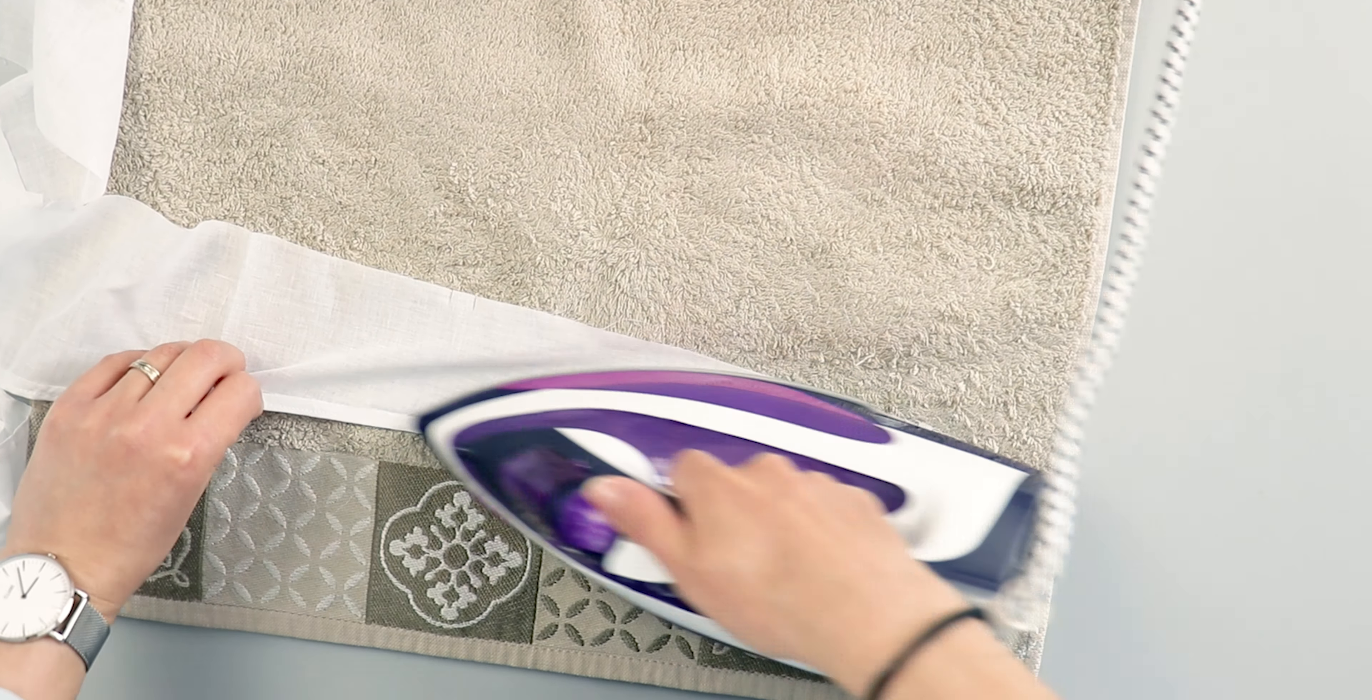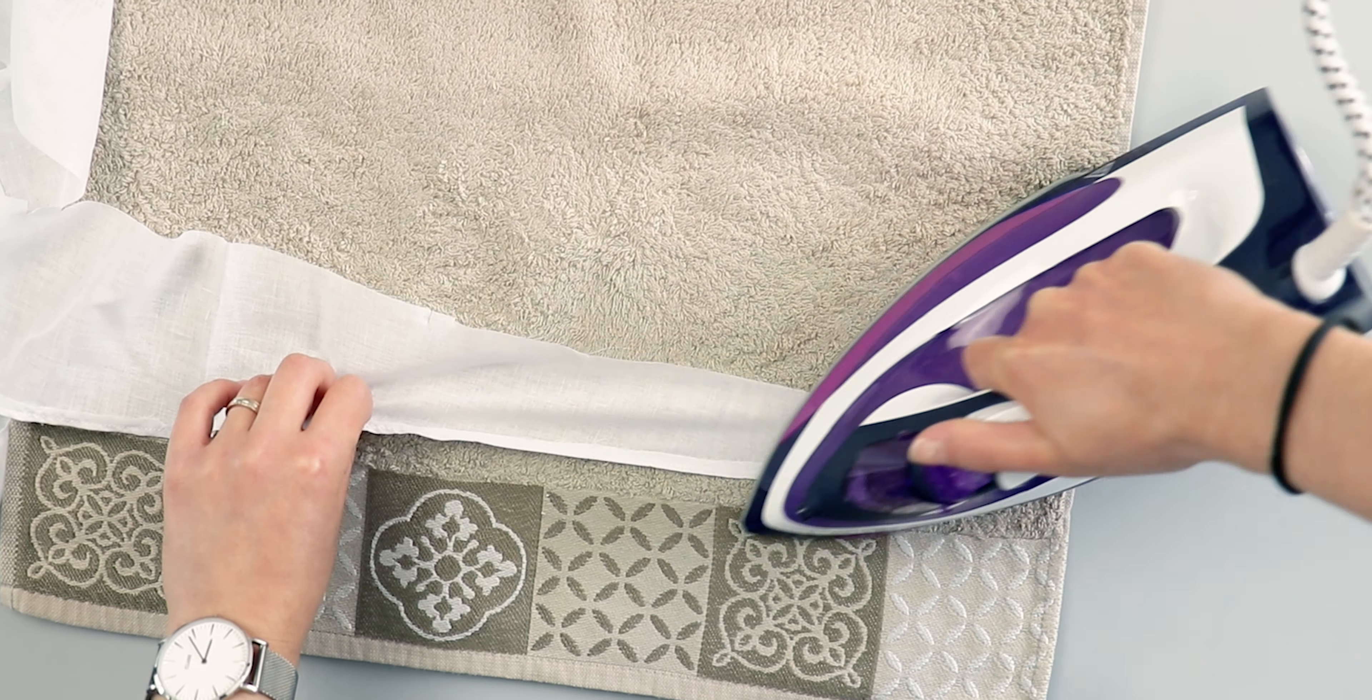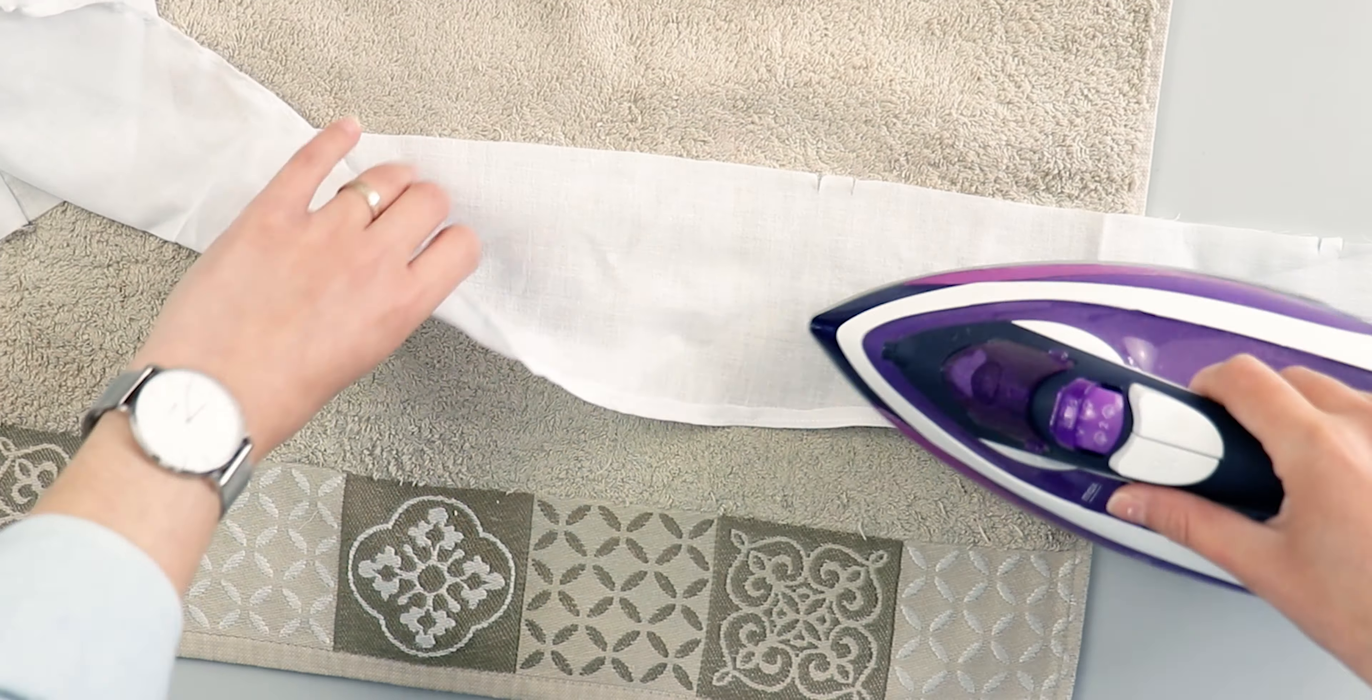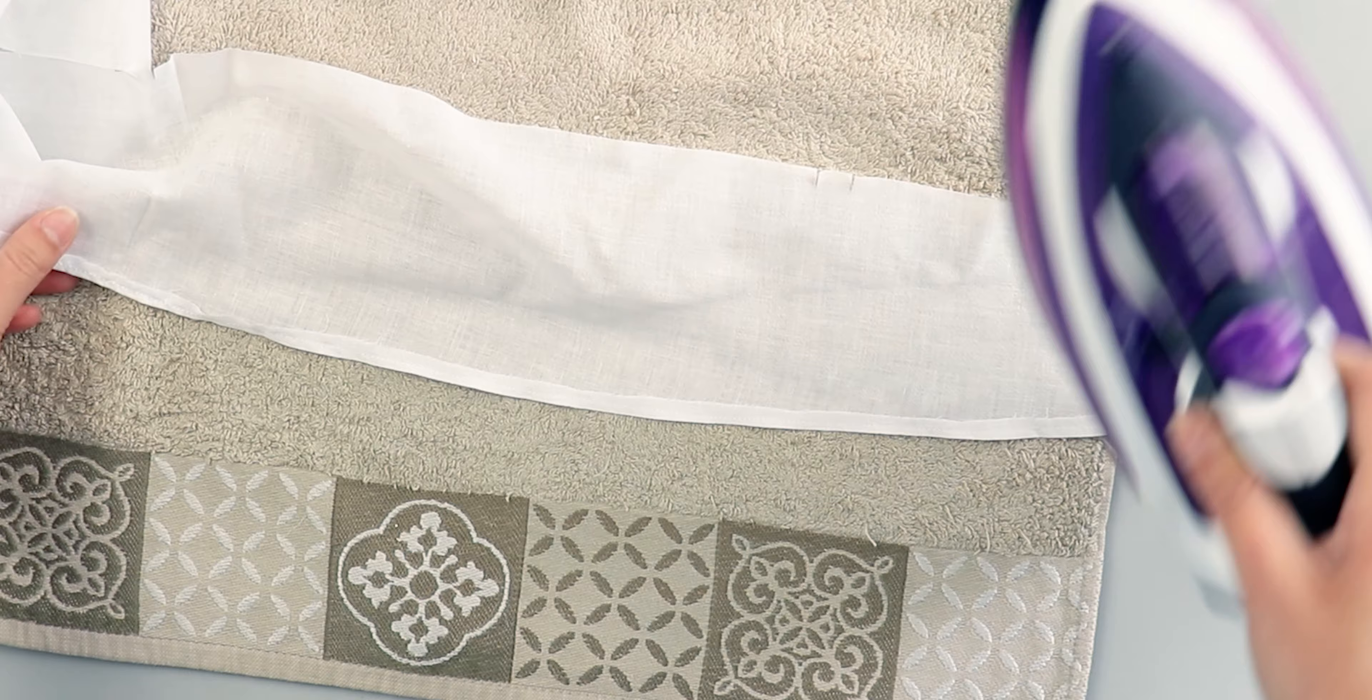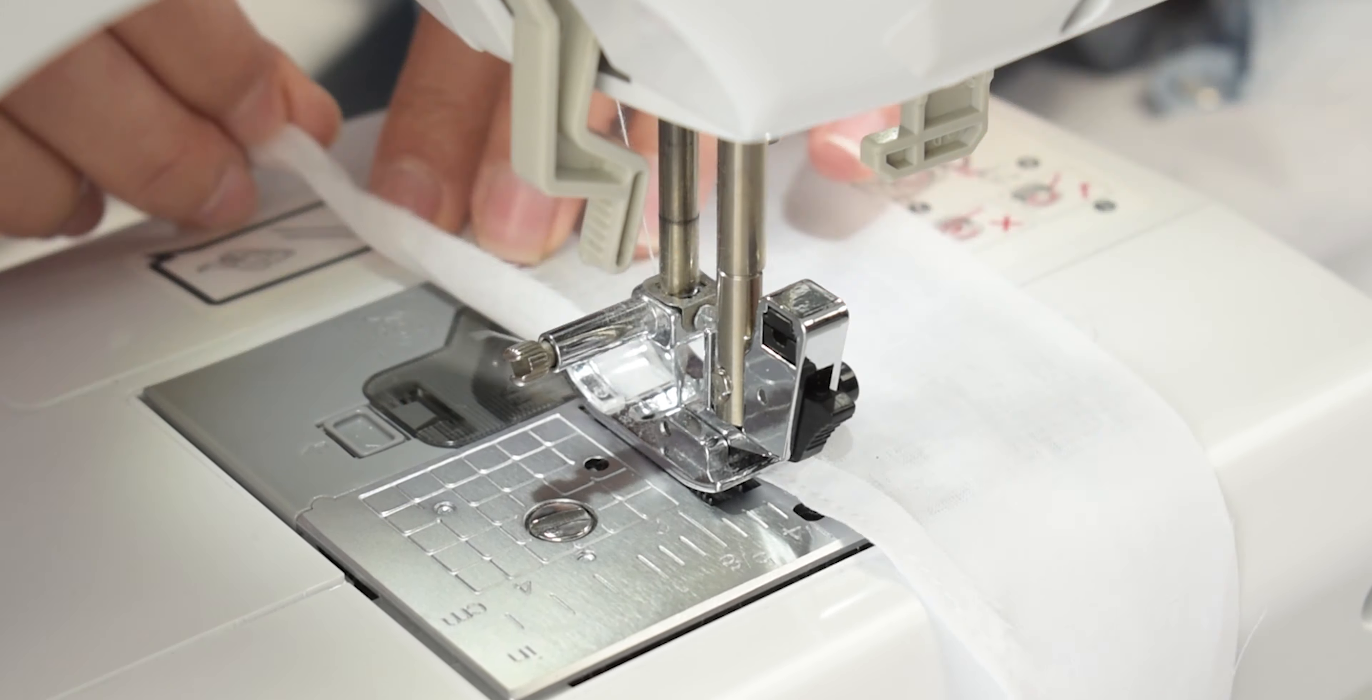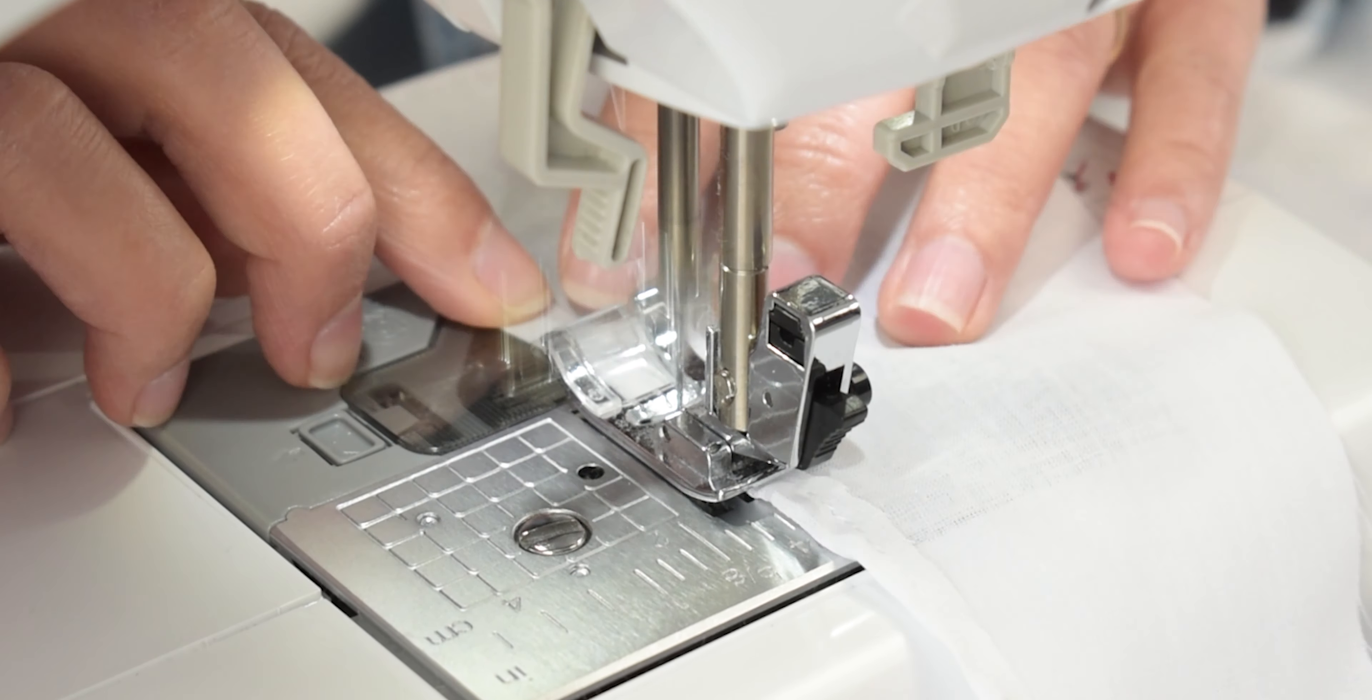Now, fold the unnotched edge of the flounce over by 0.5cm and then fold it over again. Iron the edge to help keep it flat, ready for when we sew. It should look like this when finished.